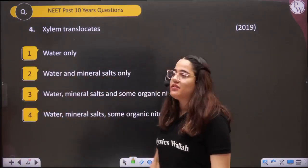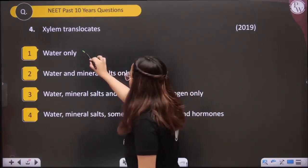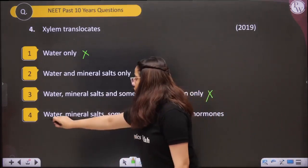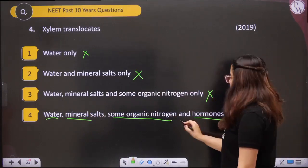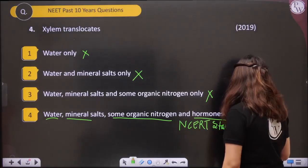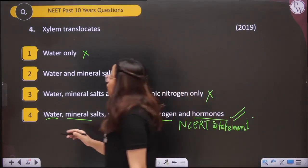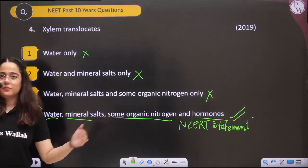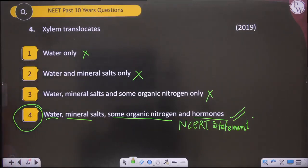Question four — Xylem translocates what? Not water only. Not water and mineral salts only. Not water, mineral salts, and some organic nitrogen only. The correct answer is: water, mineral salts, some organic nitrogen, and hormones. This is a direct NCERT statement. Xylem transports all four — water, mineral salts, some organic nitrogen, and hormones.